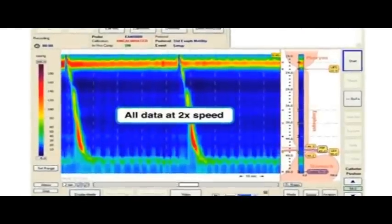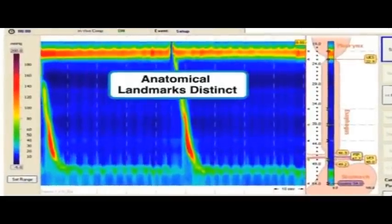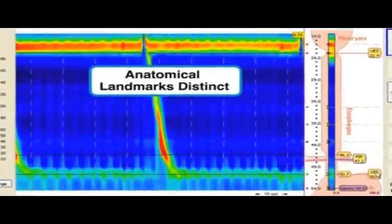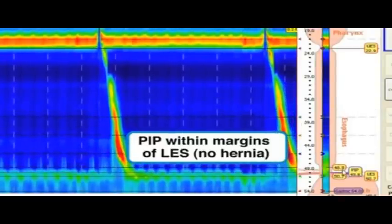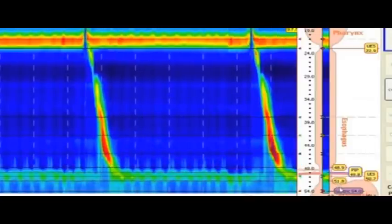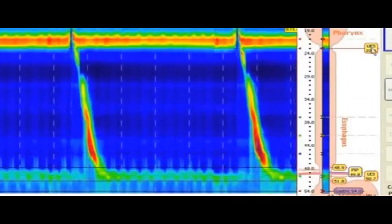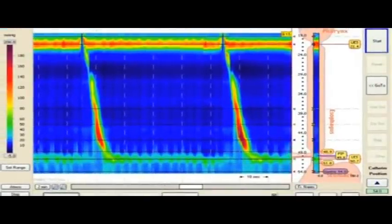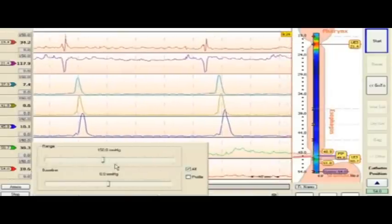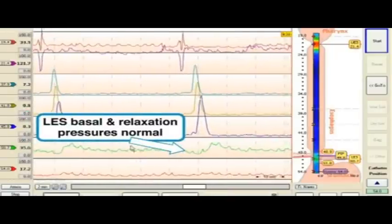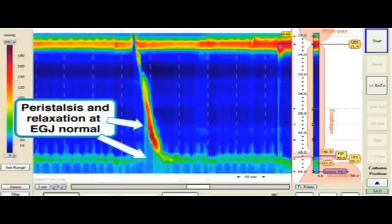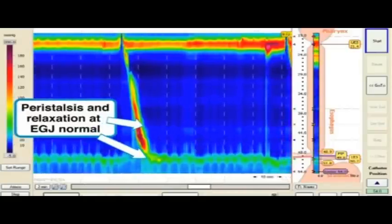Normal esophageal motility. In this subject, anatomical landmarks are distinct, and the pressure inversion point is within the margins of the LES, indicating no hiatal hernia. LES basal and relaxation pressures are normal. Peristaltic velocity and relaxation at the EG junction are normal.